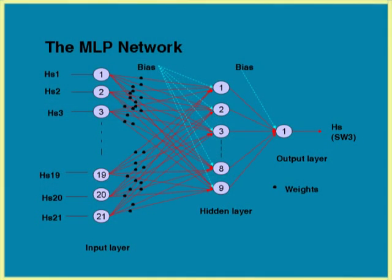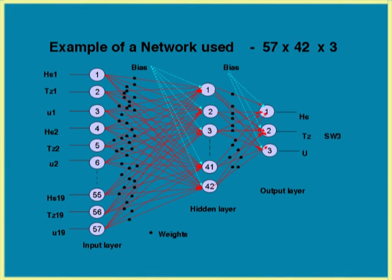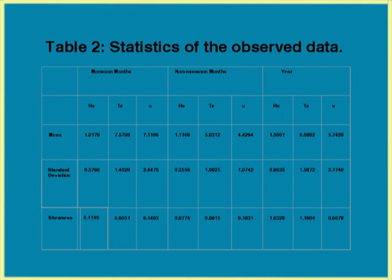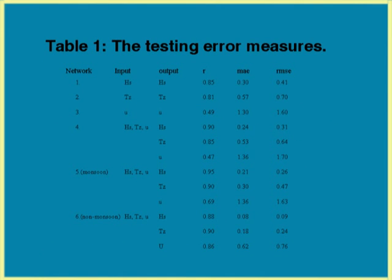We first checked whether projection of one parameter alone is sufficient — taking data at about 21 stations separated by one degree and projecting to the coastal location SW3 near Ratanagiri. Then we developed a full network projecting all data collected at these locations to obtain wave height, wave period, and wind speed at the shallow water location. This larger network proved better. We also separated data into monsoon and non-monsoon considering statistical variability, and found that this pre-processing improves results.